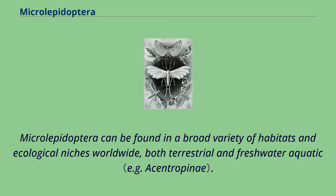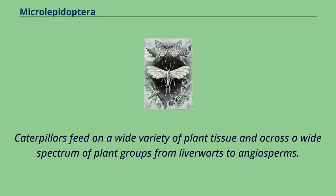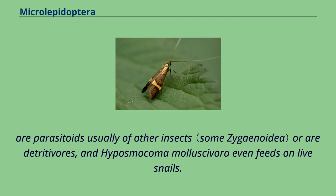Microlepidoptera can be found in a broad variety of habitats and ecological niches worldwide, both terrestrial and freshwater aquatic. They have a wide variety of feeding habits in both larval and adult life stages. Caterpillars feed on a wide variety of plant tissue and across a wide spectrum of plant groups from liverworts to angiosperms. They are either external feeders or more usually feed internally, typically as miners or tunnelers, but some feed on fungi, scavenge on dead animals, are parasitoids usually of other insects, or are detritivores, and Hyposmacoma molluscivora even feeds on live snails.